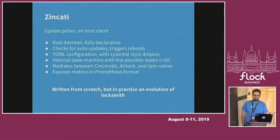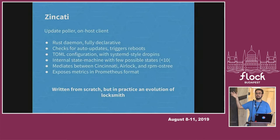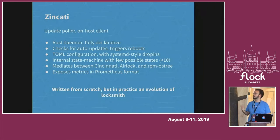On the client side there is also Zincati, which polls Cincinnati. It's another component — fully declarative, written in Rust. It checks for auto-updates and is in charge of triggering reboots. It is a bit less complex than the update engine — a single state machine with fewer than 10 states. It mediates between Cincinnati, rpm-ostree, and airlock, and exposes metrics in Prometheus format so you can monitor the whole fleet of nodes from a single point of view. In practice we took the logic from Locksmith, reorganized and reshuffled it, and brought it into a component that works with rpm-ostree.